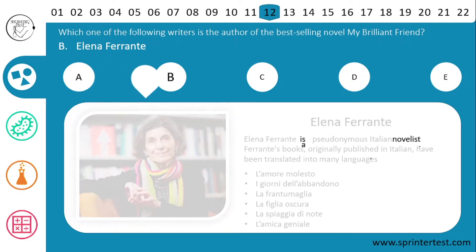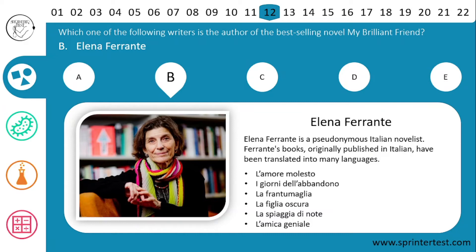Elena Ferrante is a pseudonymous Italian novelist. Her books were originally published in Italian but have been translated into many languages. Her earlier works include L'amore molesto (Troubling Love), I giorni dell'abbandono (The Days of Abandonment), La frantumaglia, La figlia oscura (The Lost Daughter), and La spiaggia di notte (The Beach at Night). Her novel L'amica geniale translates to My Brilliant Friend — confirming she is the correct answer.